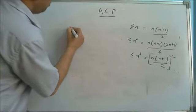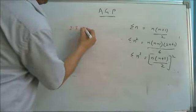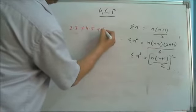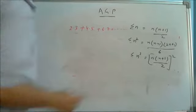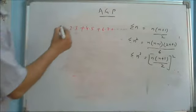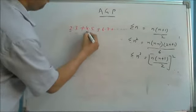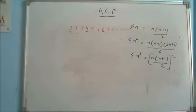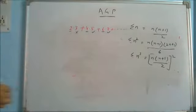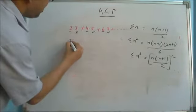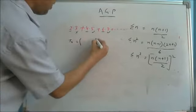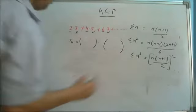Suppose I am giving you a problem: 2×3 + 4×5 + 6×7 ... the series is going on. You identify the pattern — what it is. It is consisting of two terms: the first terms 2, 4, 6 which is in AP, and the second terms 3, 5, 7 which is also in AP. So the nth term of the series is the product of two APs.